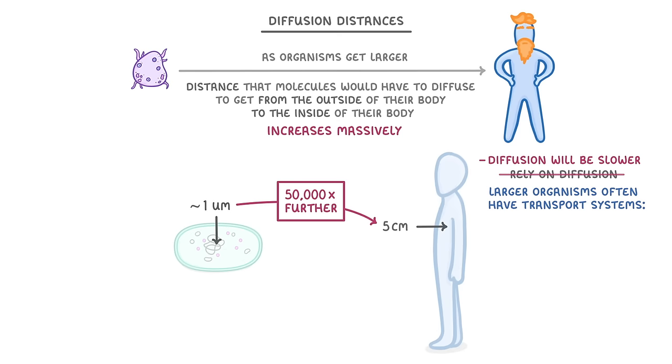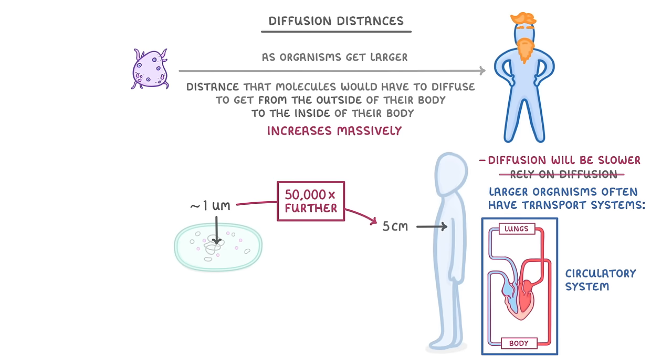To solve this, larger organisms often have transport systems like the circulatory system, which transport molecules from the exchange surfaces where they enter the body around the body to whichever cells need them. This means that the molecules then only have to diffuse a very short distance to get into the cells.